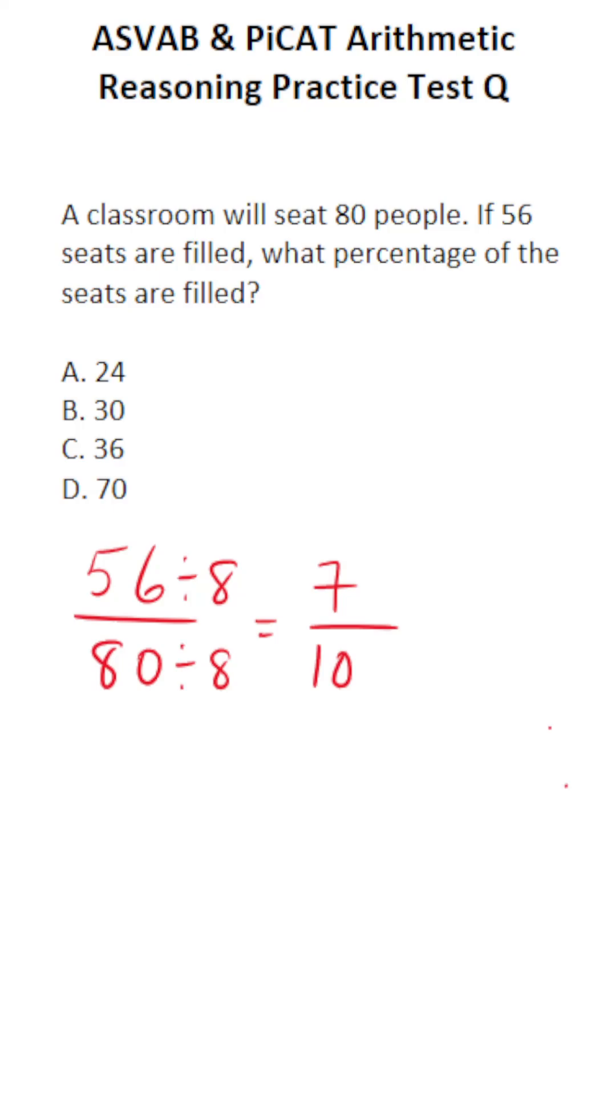Now you should know that anything divided by 10 is just that decimal. In other words, 7 divided by 10 is 0.7, which is the same thing as 70%.